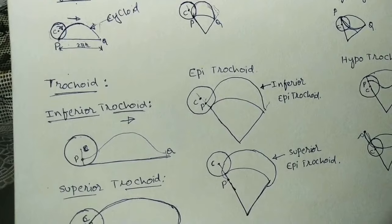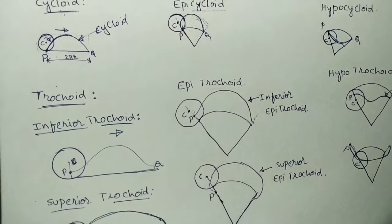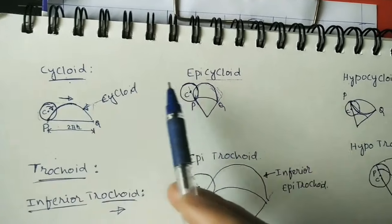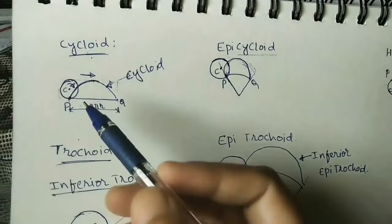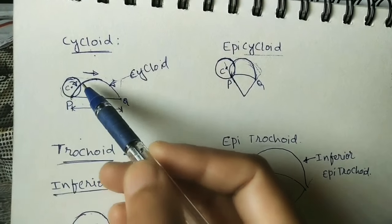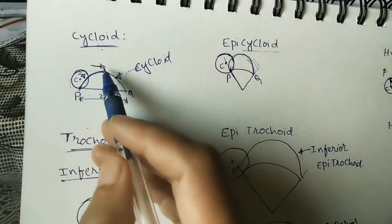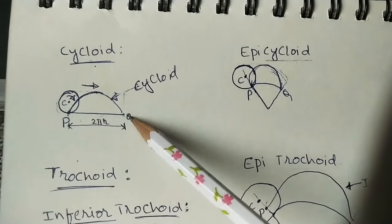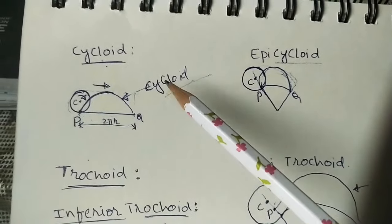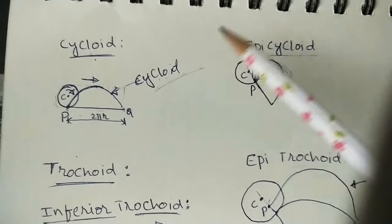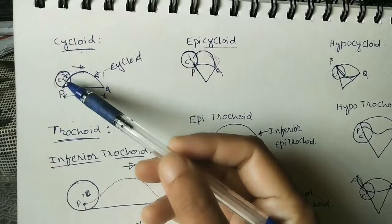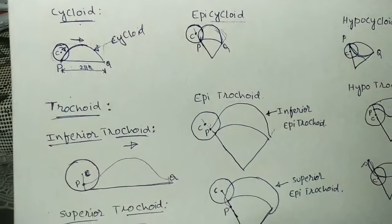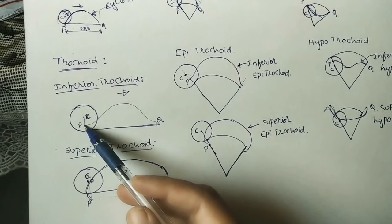Welcome to this class where we will discuss about trochoids. Before discussing this, let us recall cycloidal curves. We already did cycloids — trochoids are similar to cycloids. Here we take one point P on the circumference of a rolling circle, where the surface is horizontal. If P is on the circumference, the curve traced is called a cycloid. But if P is inside or outside the circle, we get a different curve.